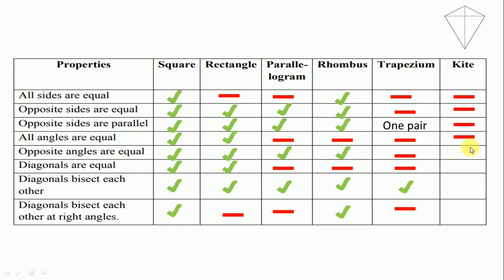Opposite angles are equal — one pair of opposite angles are equal. Diagonals are equal — no, diagonals are not equal. Diagonals bisect each other at 90 degrees — yes.